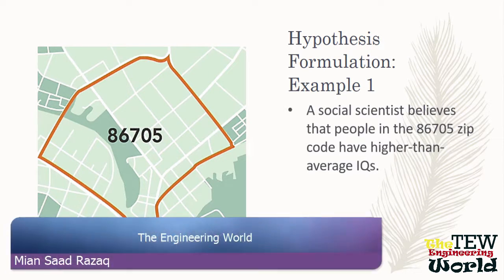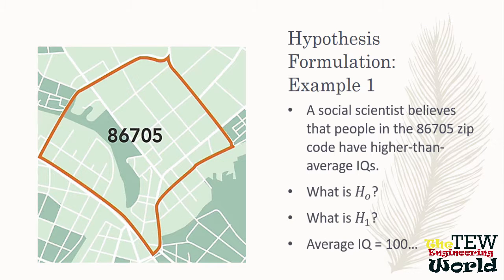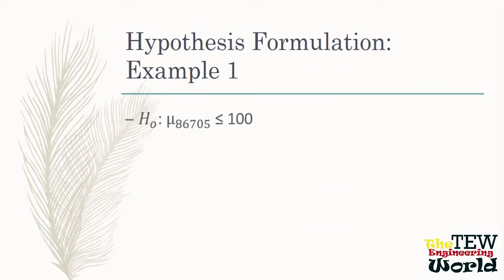Here is one example of formulating a hypothesis. A social scientist believes that people in the 86705 zip code have higher than average IQs. Average IQ is 100. So the null hypothesis is that the population mean in that zip code is less than or equal to 100. The alternative hypothesis is that the population mean is greater than 100.